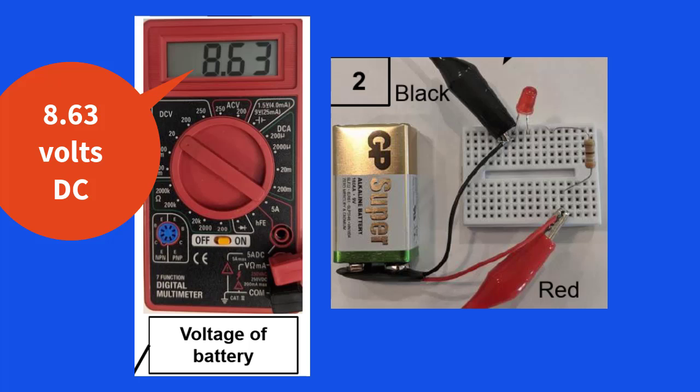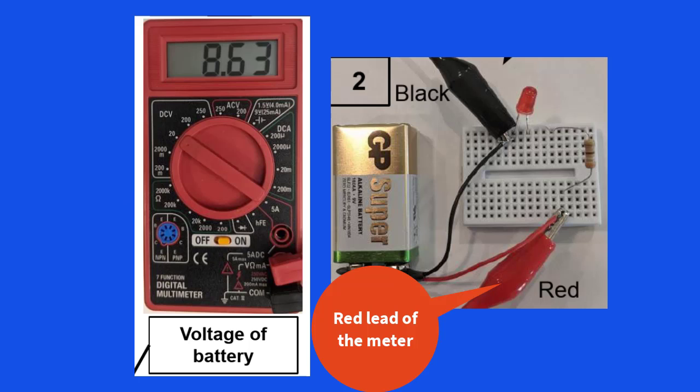Pay attention to the fact that we have the red lead of the meter touching the positive of the battery, and the black lead touching the negative of the battery. We can reverse the leads to measure voltage, and if we do, the meter will show a negative sign on the display, showing that we have connected the meter in reverse to the polarity of the battery. That is not a problem, but I just wanted you to be aware of that.